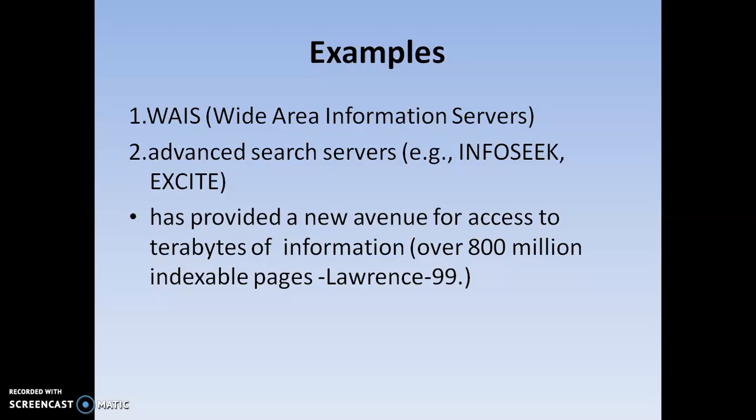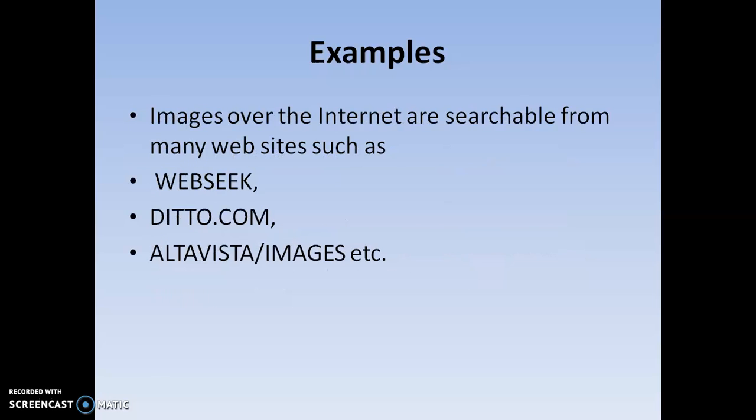What are the various examples of Information Retrieval Systems? WAIS — Wide Area Information Servers — facilitates you to extract information. Other advanced research engines like InfoSeek and Excite are also very good servers, providing new avenues to access terabytes of information. Not only small amounts — using IRS you can access terabytes of information. Images can also be extracted with the help of other servers and websites like Webseek, Dicto.com, AltaVista, and others.